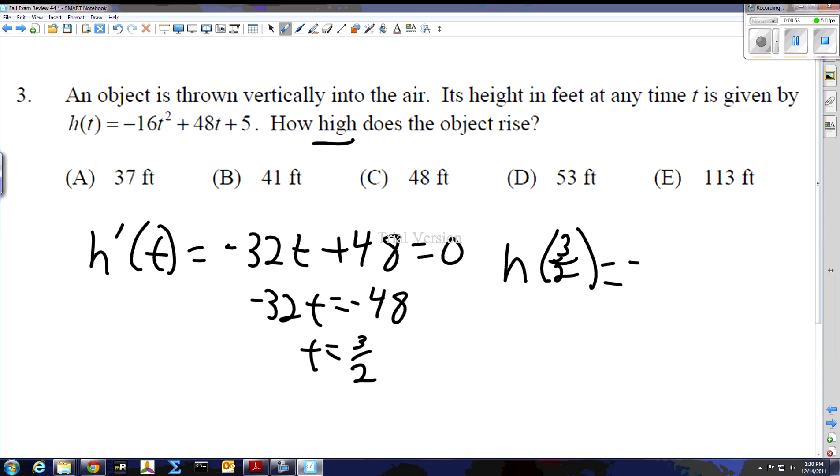So we've got negative 16 times 9 over 4 plus 48 times 3 over 2 plus 5. Well, 4 going into 16, 4 times, so we have negative 36 with the first thing. 2 going into 48, 24 times.